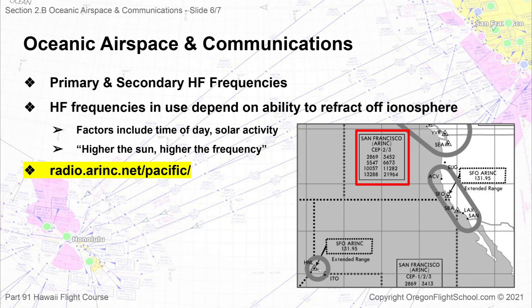There will typically be two HF frequencies issued: primary and secondary. As the name suggests, primary frequency is the go-to main frequency, and secondary is more of a backup. You will probably not ever have to deal with the secondary frequency, but monitor that frequency on your second HF radio. The HF frequencies in use depend on a number of factors. Because these radio waves are being reflected off particles in the ionosphere, the time of day and solar events taking place can affect the ability of these particles to reflect the signal back down to Earth. The rule of thumb for frequencies is: the higher the sun, the higher the frequency. If you are flying at night, the HF frequency will probably be a lower number; during the day, it will be higher. To get specific frequencies in use in real time, visit radio.airinc.net/Pacific before your flight, or ask your center controller when they hand you off to San Francisco Radio.